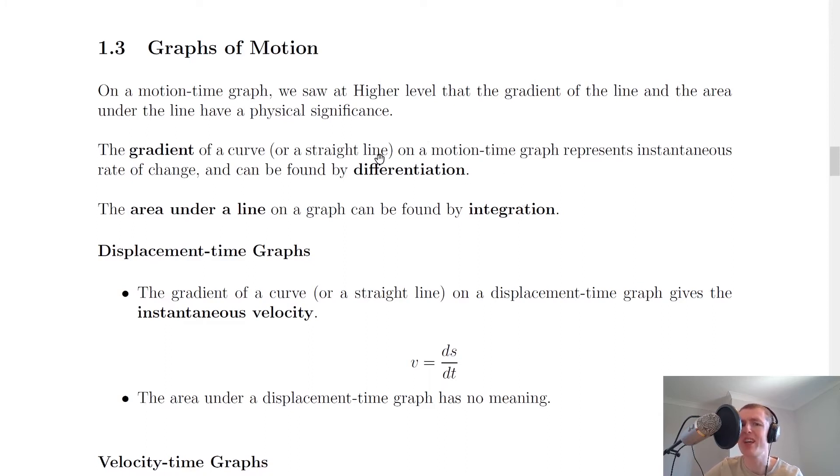So the gradient of a curve or a straight line on a motion time graph represents instantaneous rate of change and can be found by differentiation, whereas the area under a line on a graph can be found by integration.